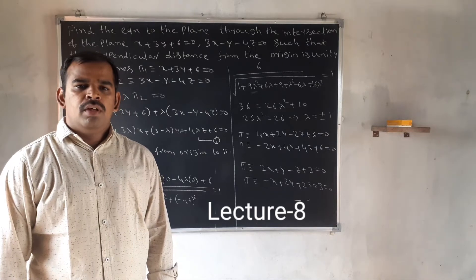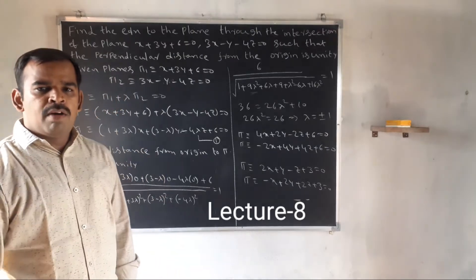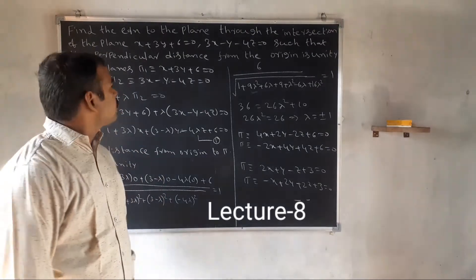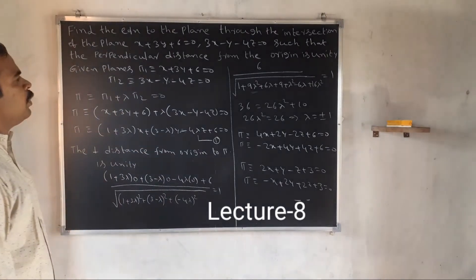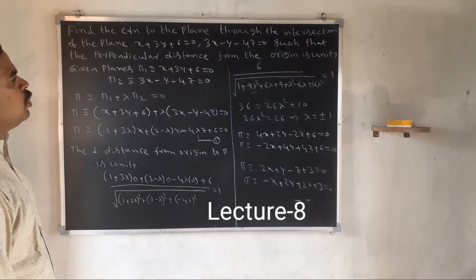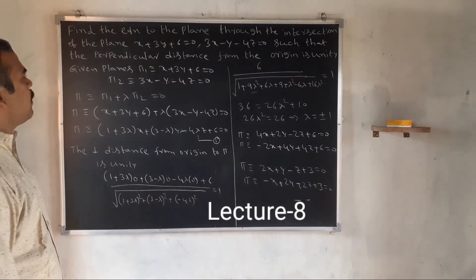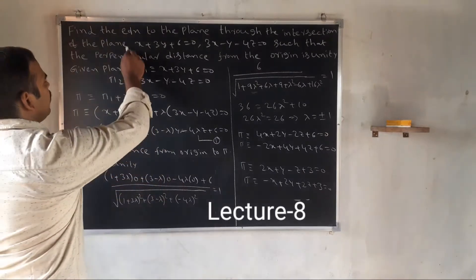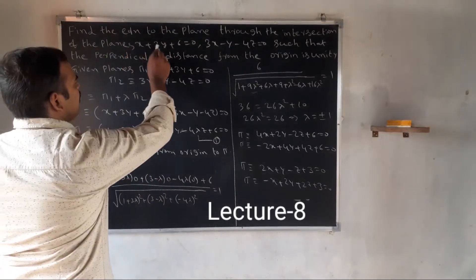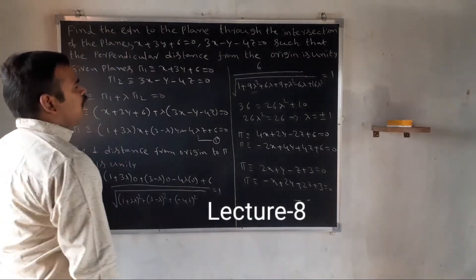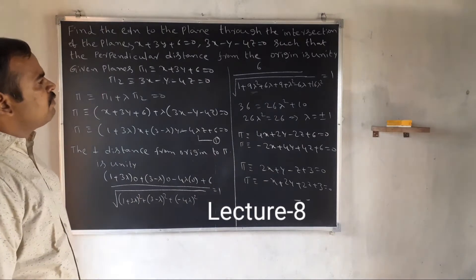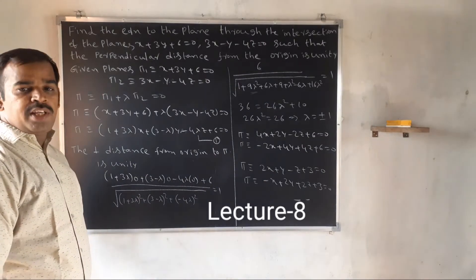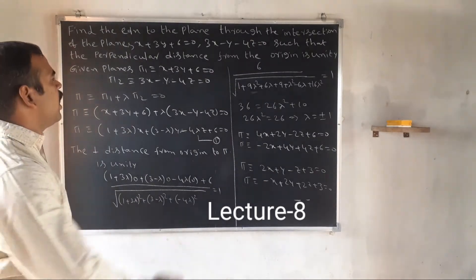Good morning to all. Another problem of plane equations. Find the equation to the plane through the intersection of the planes x plus 3y plus 6 equal to 0 and 3x minus y minus 4z equal to 0.